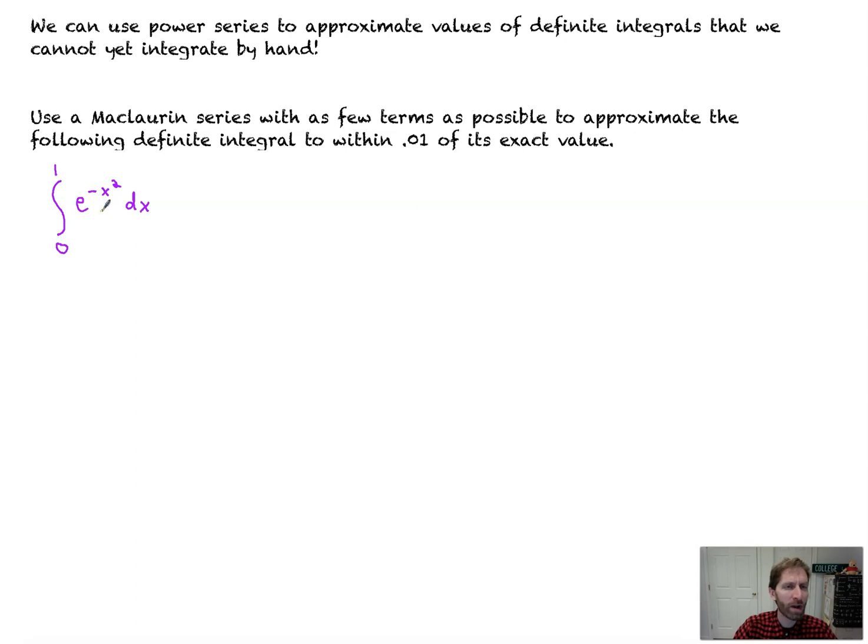So what we're going to do is use a Maclaurin series for e to the minus x squared. Let's build that. Because right now, we can't integrate that by hand, right? Not without multivariable calculus. So up to this point, we couldn't do it. But our calculators could. And this function is continuous, so we can integrate it and it has area beneath it. So how do our calculators do it? How can we get a good approximation?